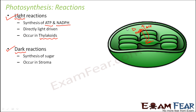So this is the overall process of photosynthesis. First the light reaction, in presence of light, in the thylakoids. Then the dark reaction in the stroma, utilizing the energy which was produced during the light reaction. Now why are they called dark reactions? We will look at all those things later.